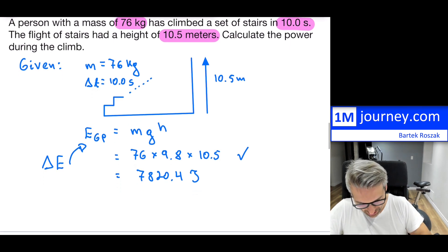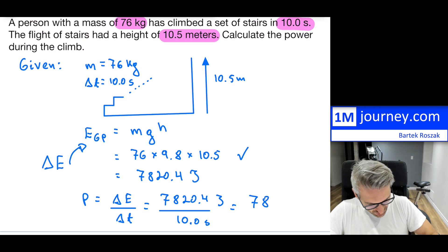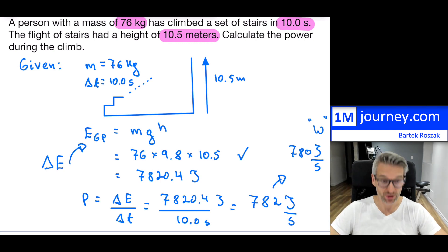Notice everything is in standard units, so I can just plug it all back in: 76 × 9.8 × 10.5. Multiply all of them together. I'll just keep it. This is the amount of energy or work that you would have to do to get this person up there. So that's my energy transfer. If I wanted to calculate the power, in order to calculate power now, that's going to be the work done divided by delta T. Delta T was given. So therefore this is not very difficult. This is 10 seconds.